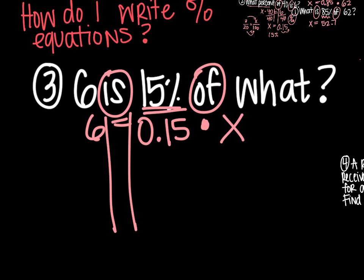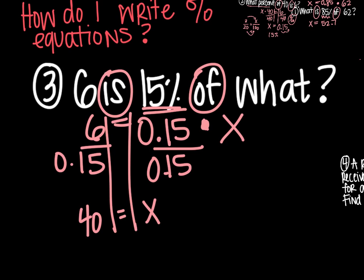I want to get x by itself. It's attached by multiplication. So to undo it, I need to divide by 0.15. We have to do that on both sides. Here we're definitely going to need a calculator, because it's really difficult to take 6 divided by 15 hundredths without one. So when you do that, you get an answer of 40 equals x. And then it says of what? So we're talking about a number. 6 is 15% of 40, and we want to make sure that 40 makes sense.